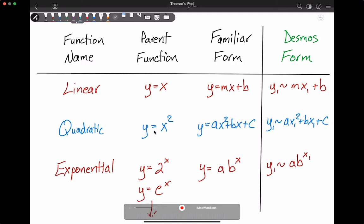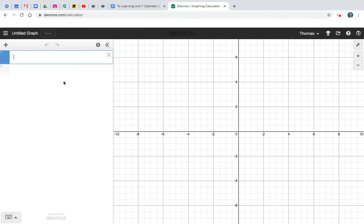Quadratic, you're used to the parent function y equals x squared. The familiar standard form is y equals ax squared plus bx plus c. So we're going to mimic this familiar form and transfer to Desmos form by y equals ax squared plus bx plus c. The x and the y are going to need this subscript of one, because you're going to be getting it from the table that you're going to create.